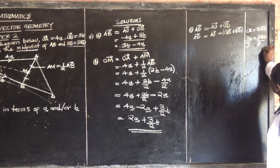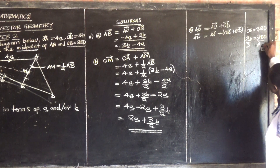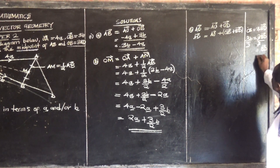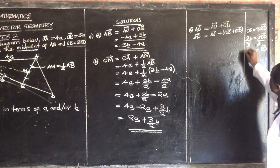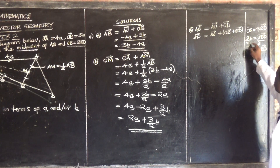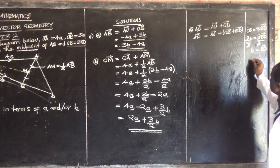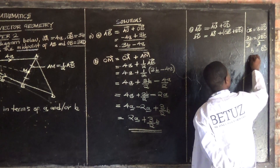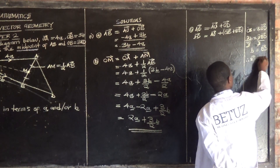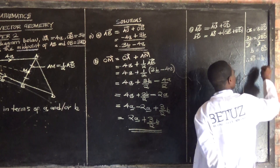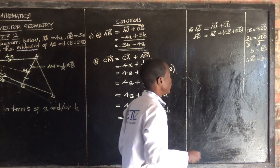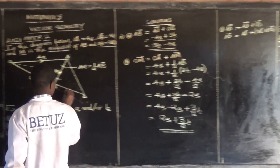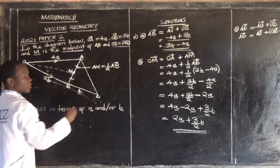So BD equals 3b divided by 3, which equals vector b. Therefore BD is equal to vector b.